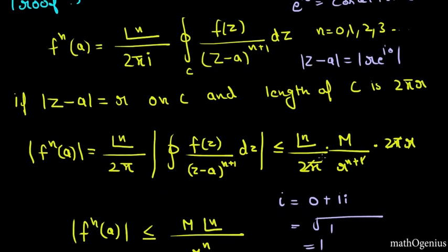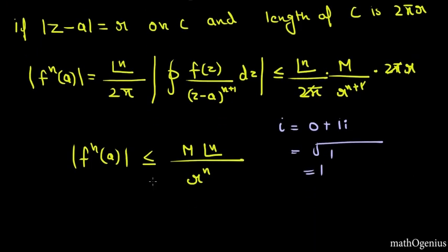Now we will further solve it. 2 pi r and 2 pi gets cancelled, r gets rid of this 1 and we get this formula at the end which is mod of f^n(a) less than equal to M n factorial divided by r raised to power n. So this is how we prove the Cauchy inequality.